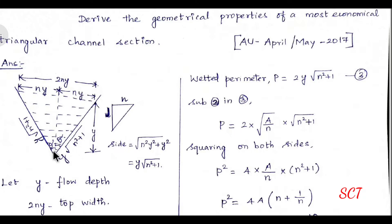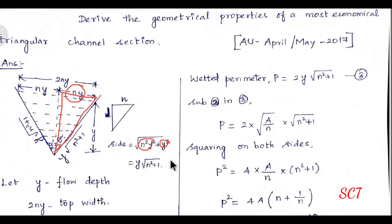Now we calculate the sloped side of the first triangle. We apply the Pythagorean theorem: the side equals the square root of depth squared plus half top-width squared. That gives us √(y² + (ny)²), which simplifies — taking y² common — to y√(n² + 1). So the sloped side length is y√(n² + 1).